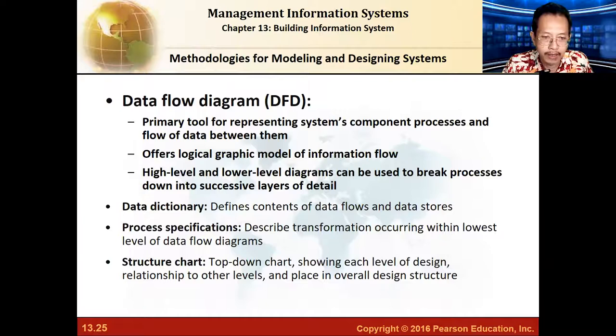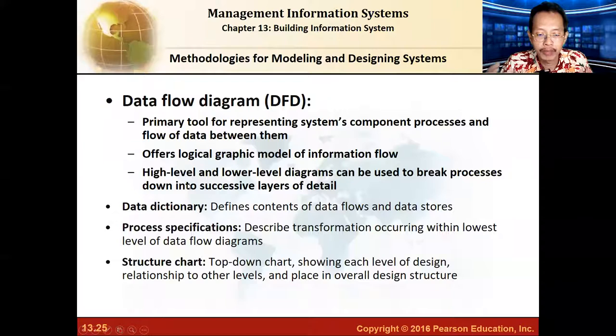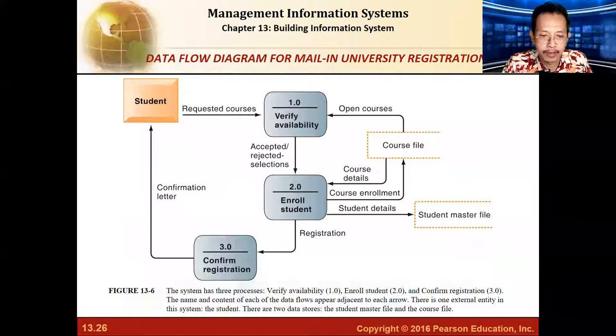The data flow diagram is basically a representation of the components, data, and the flow of data in a system. You can have a high-level system and a lower-level system. The high-level system is a simpler diagram, also called the context diagram, while the lower-level system is the leveled diagram showing more intricate details.